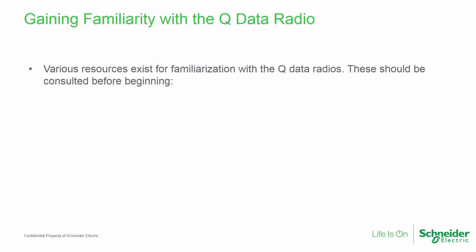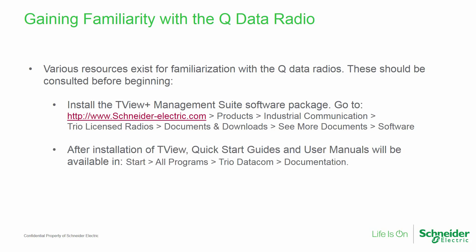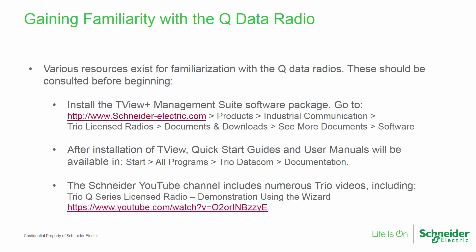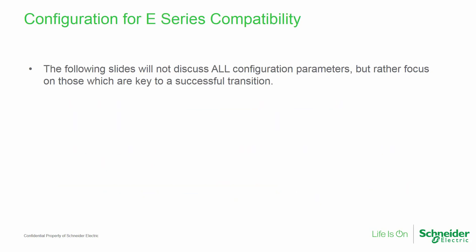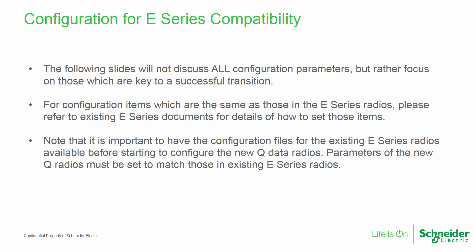Various resources exist to learn about the Q data radios and should be consulted before beginning. The TVU Management Suite software can be downloaded at no cost by following the link shown. As part of the software installation, Quick Start guides and user manuals will be available in the TRIO Datacom Programs folder. Also, the Schneider YouTube channel includes numerous TRIO videos. Configuration items shown on the following slides will focus on those which are key to a successful transition. It is important to have the configuration files for the existing radios available before starting this process, as parameters of the new Q data radios must be set to match those in existing radios.